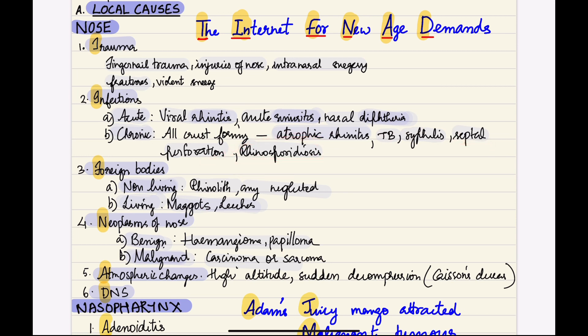F is for foreign bodies, which can be non-living or living. Under non-living we have rhinolith, which is stone formation in the nose. Under living we have maggots and leeches.